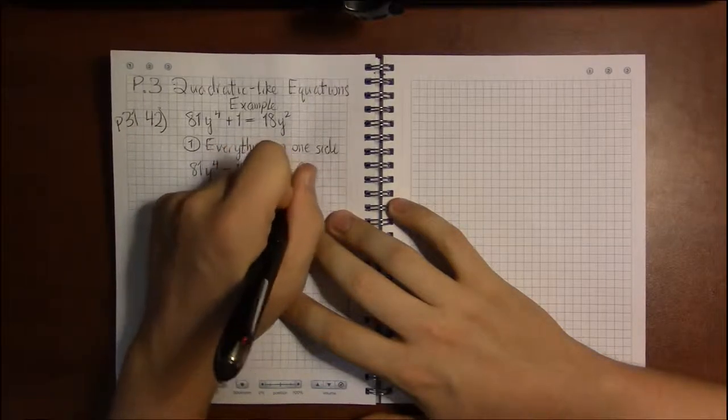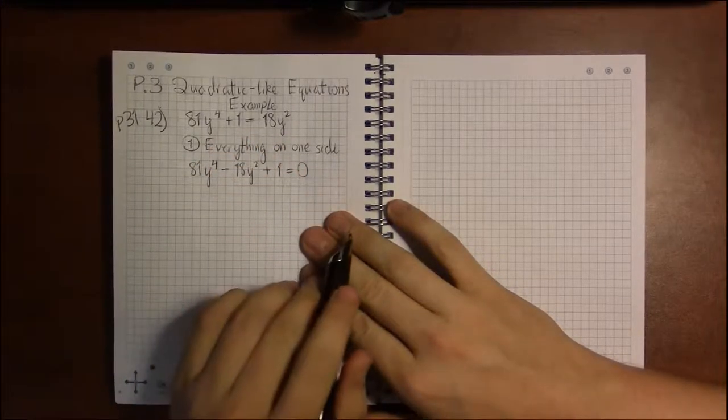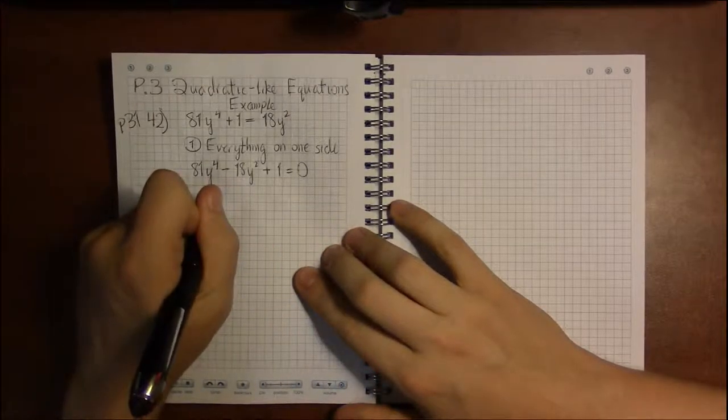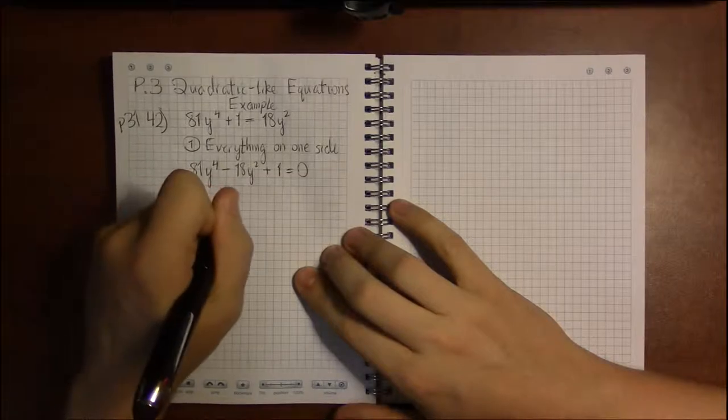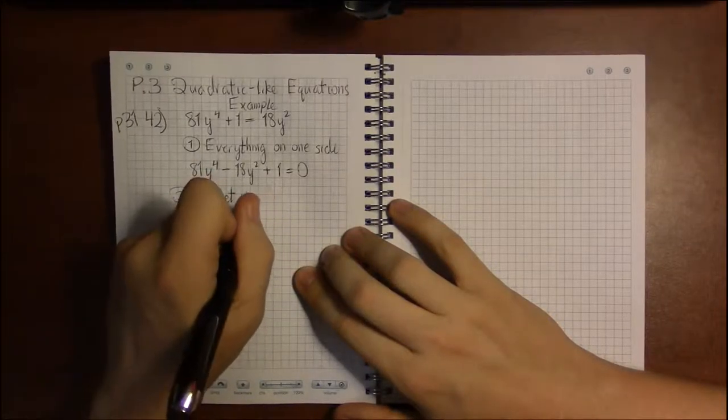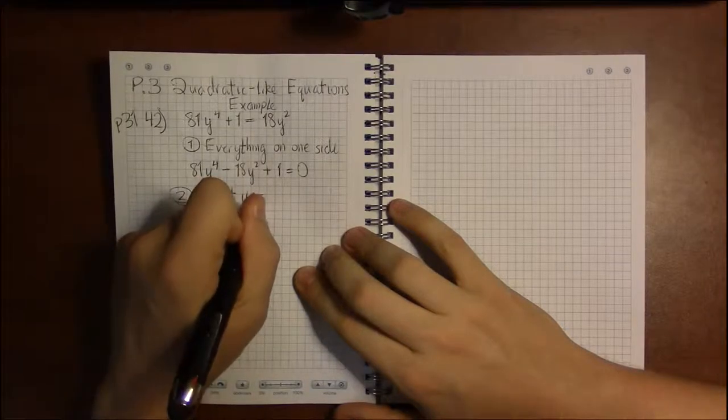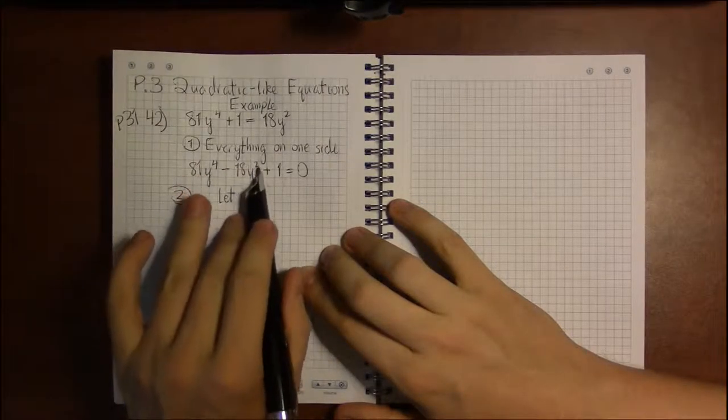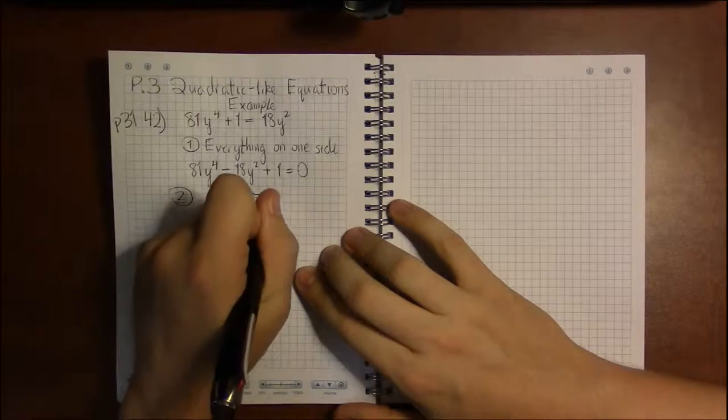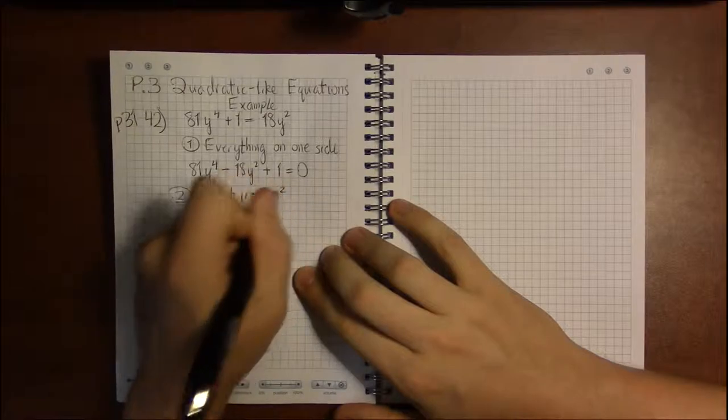And that leaves me with 0 on the right, which is what I want. Then the trick to substitution, step 2, is to let u equal the middle variable. So in this case, let u equal y squared.